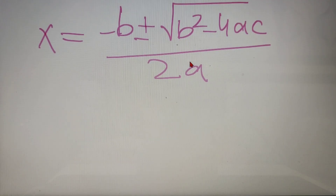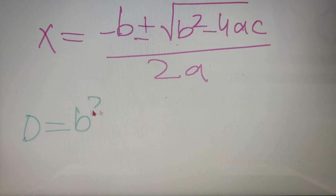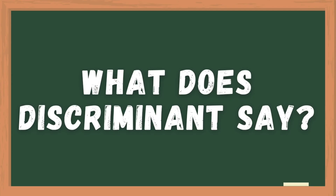The part under the square root, that is b² − 4ac, is called the discriminant of the quadratic equation. So D = b² − 4ac. Let us learn what we can tell about the roots of the quadratic equation with the help of the discriminant.